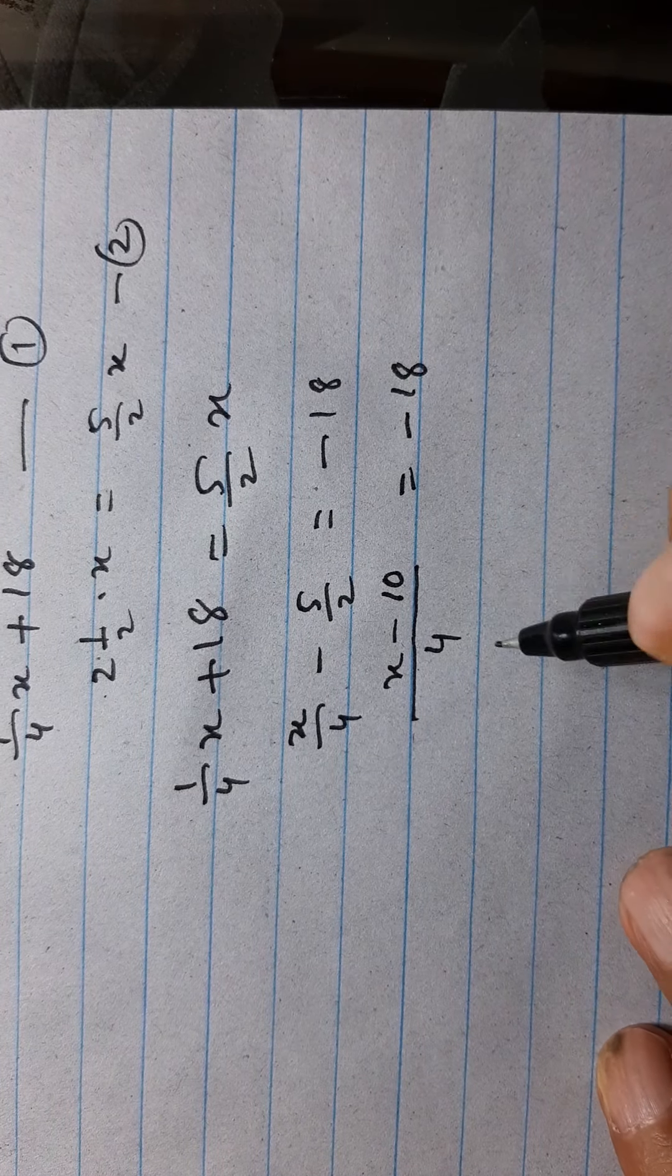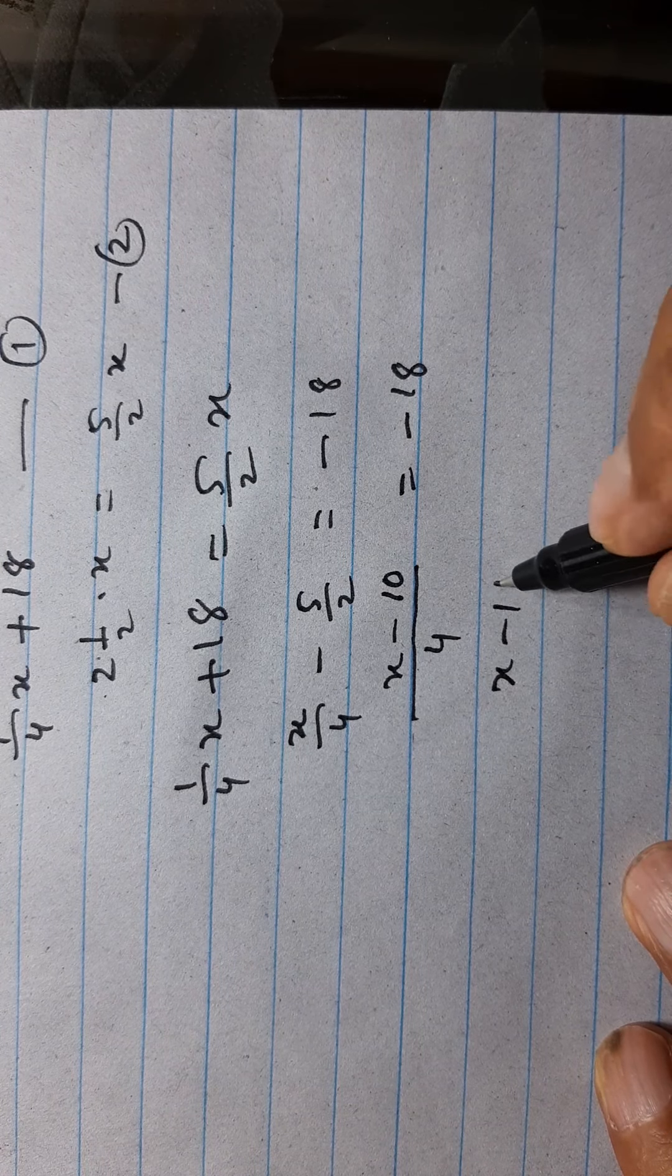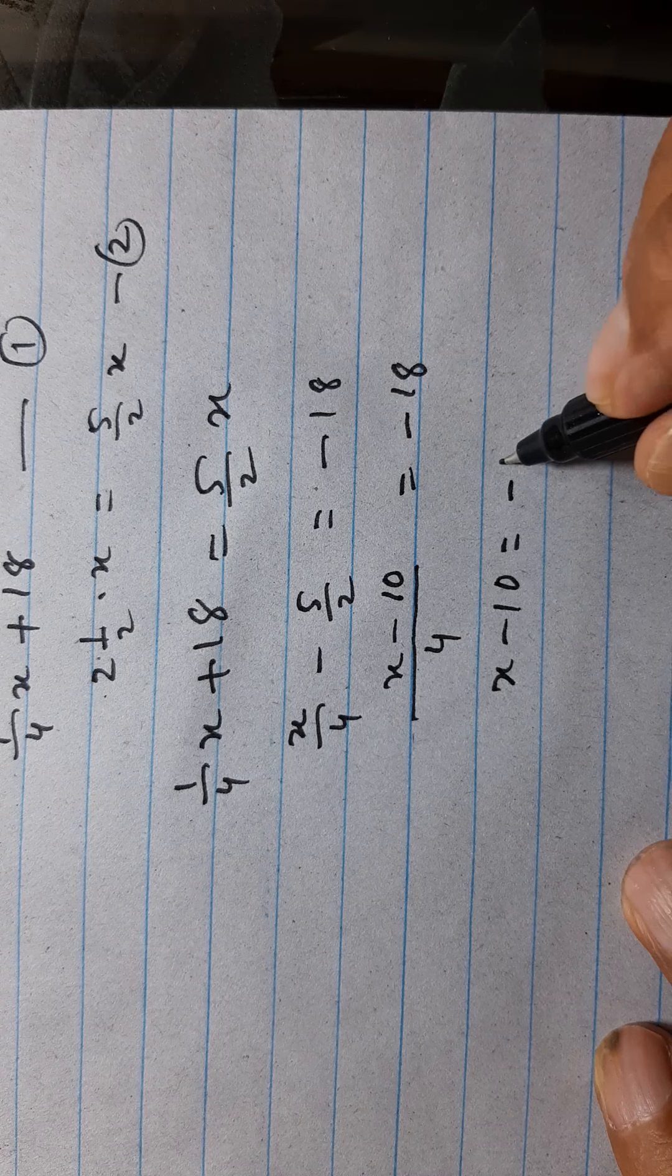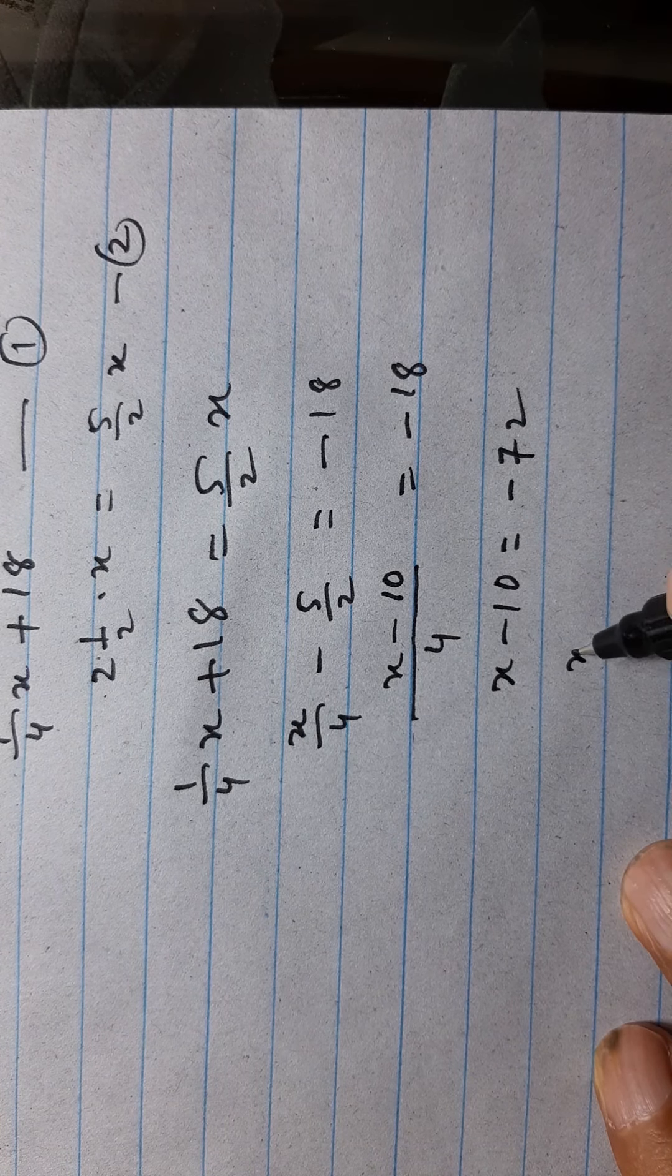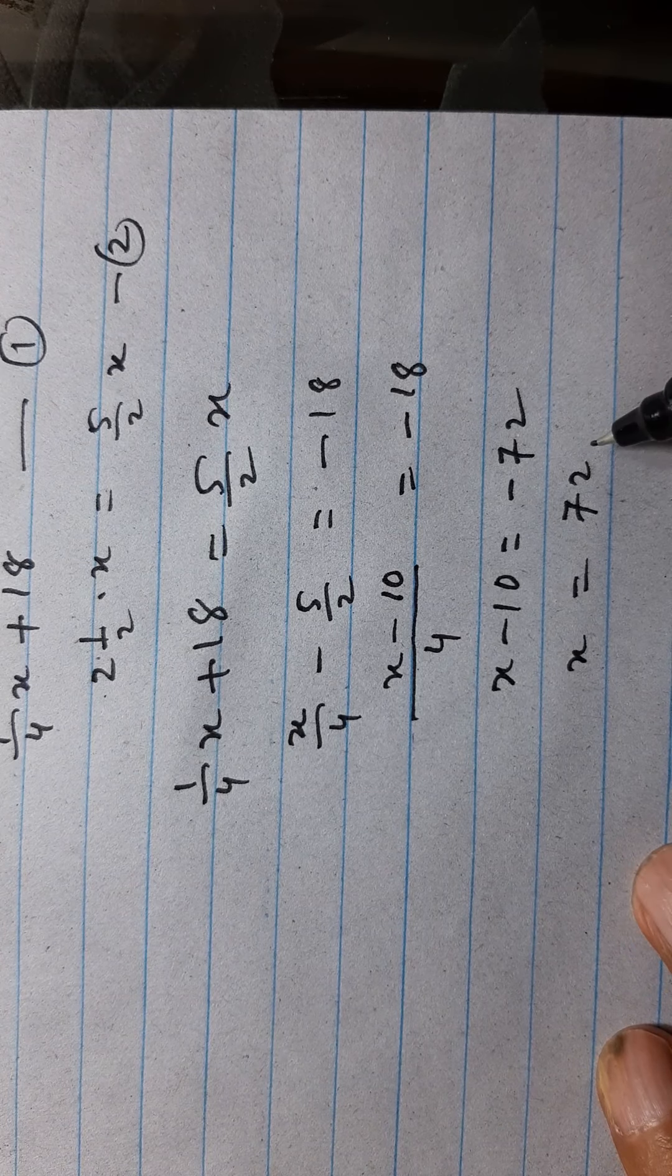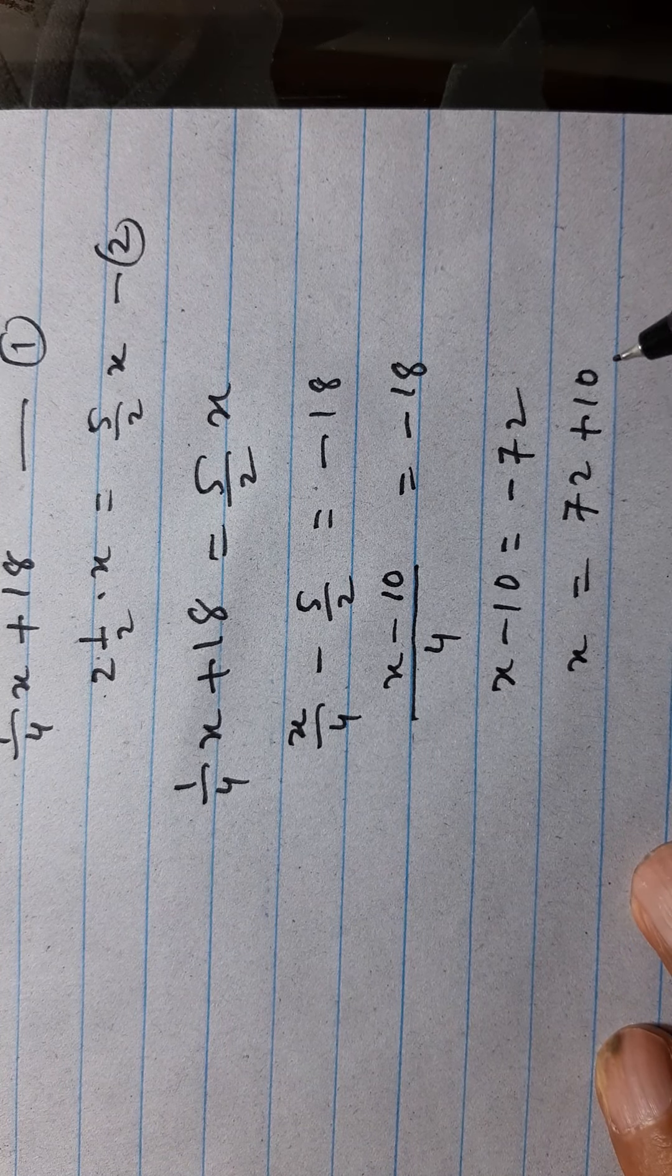And this will be x minus 10 is equal to 4 multiply minus 18 is minus 72. Then x is equal to minus 72 plus 10.